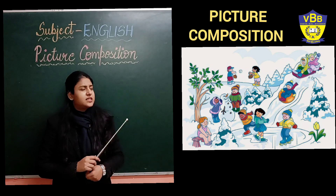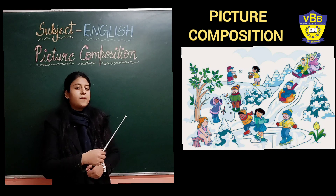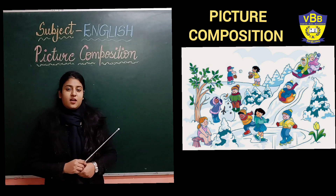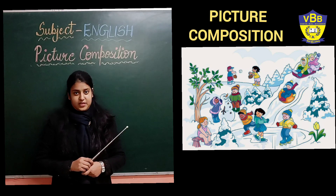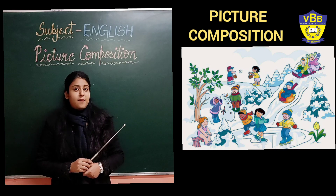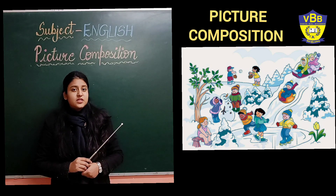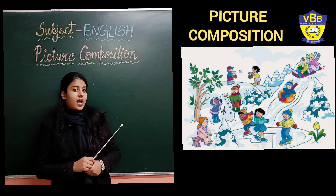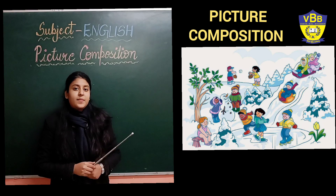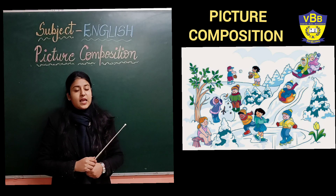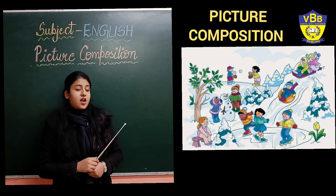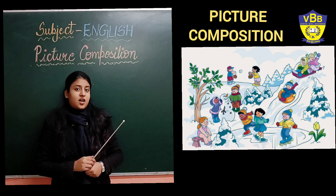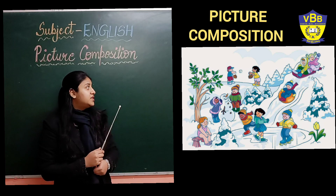What all you can see in this picture? There is snow everywhere. Children are playing with the snow. Some children are skating on the snow and some are making snowmen. There are different trees in this picture that are covered with snow.